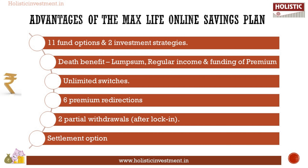Next, we shall analyze the advantages and disadvantages of MaxLife Online Savings Plan. Advantages: you have a choice of 11 funds and 2 investment strategies. Apart from Lump Sum Death Benefit, there is the Funding of Premium and Monthly Income Benefit under Variant 2. Unlimited free switches, 6 Premium Redirections, and 2 Partial Withdrawals after the lock-in period are allowed in a policy year. A settlement option can be exercised during maturity.